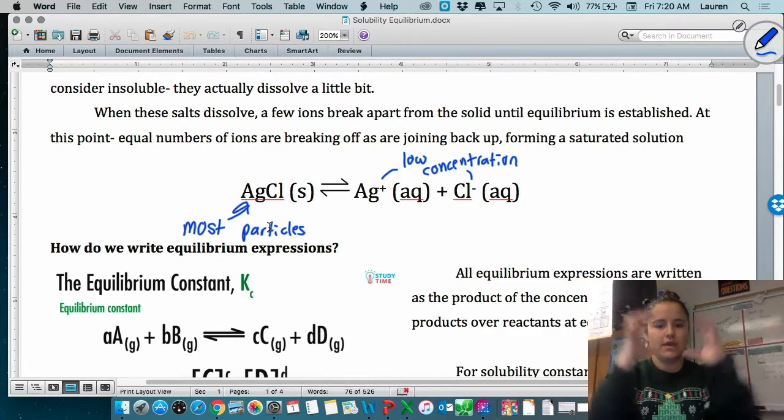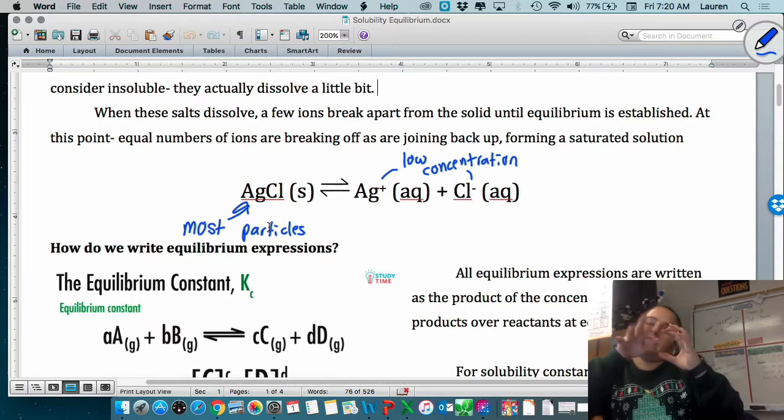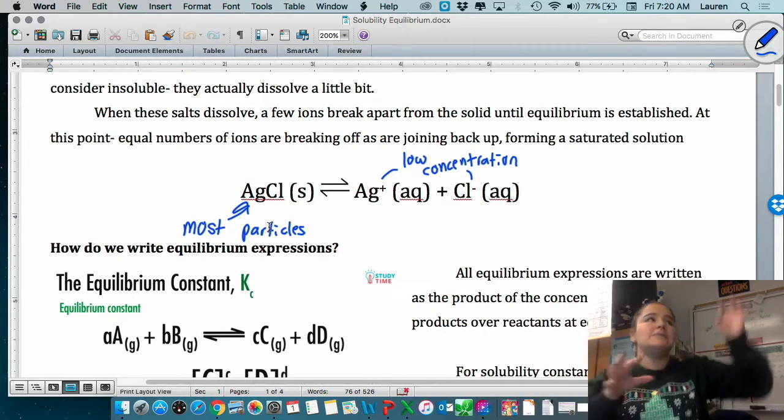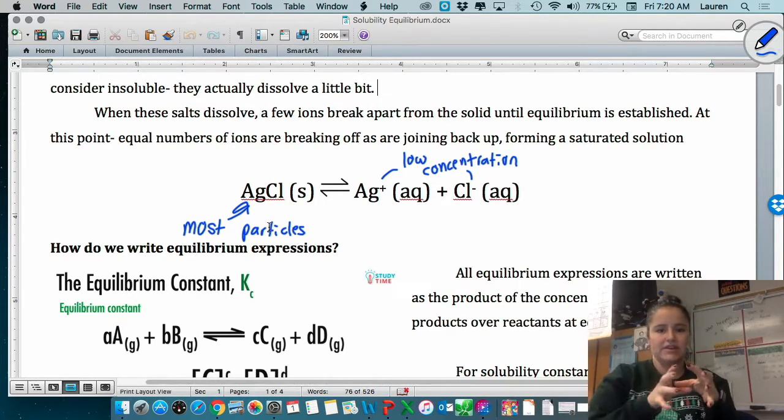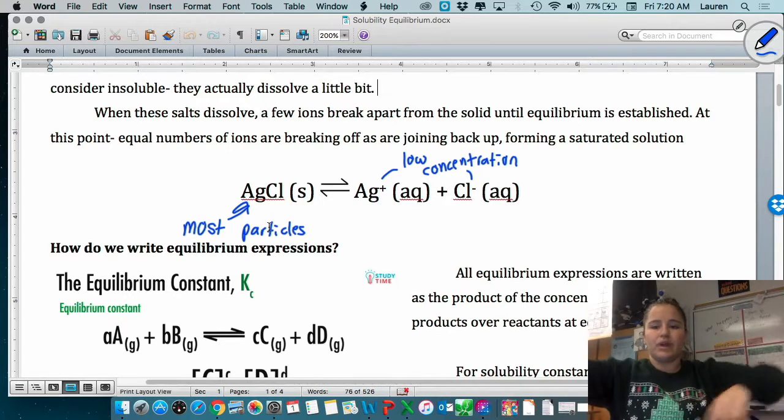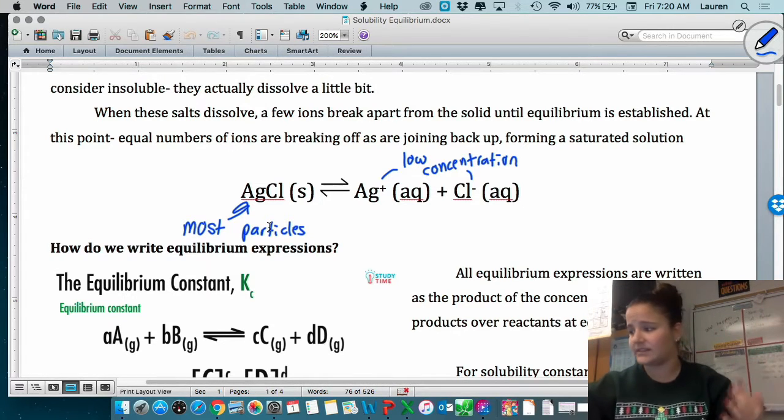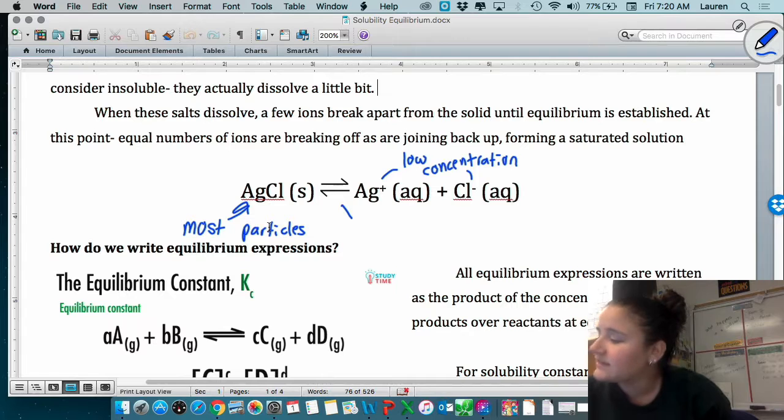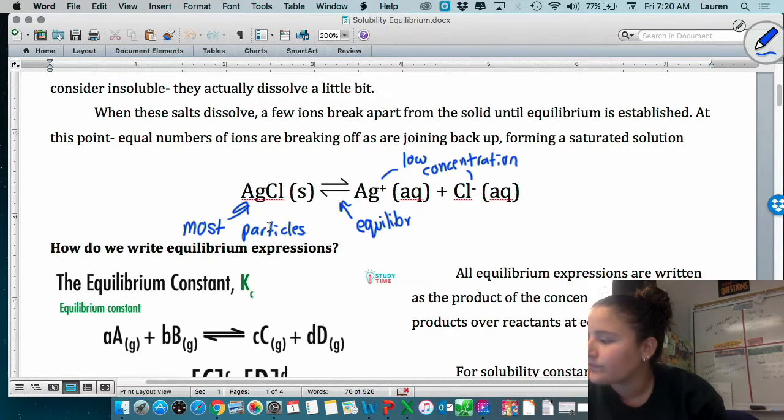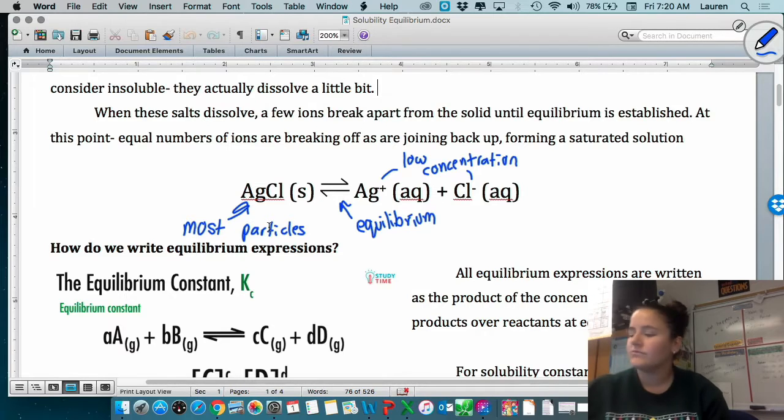Basically, we have the solid, and every now and then, some of these ions are breaking off. At the same time, some of these ions over here are coming together. They're breaking off and coming together and breaking off and coming together at equal rates. And that's what this equilibrium arrow means.